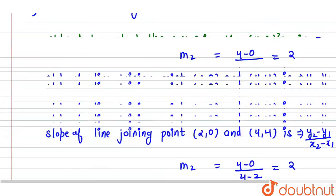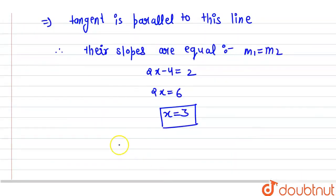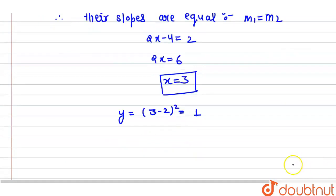Now we have x equals 3. Since y equals (x minus 2) whole square, then y equals (3 minus 2) whole square, that is 1. So the point will be (x, y), that is (3, 1).